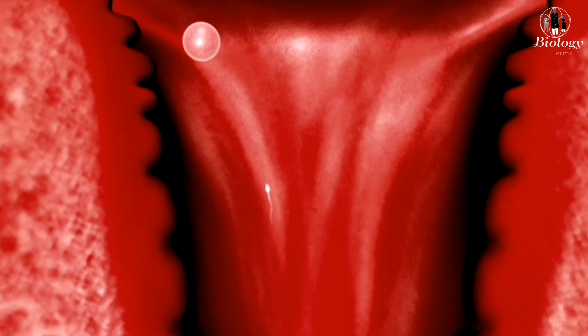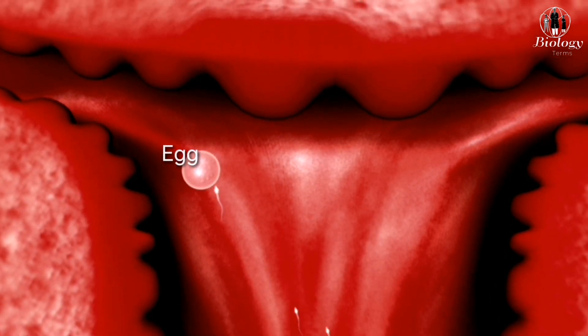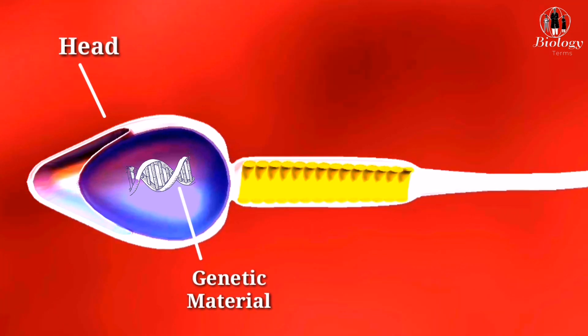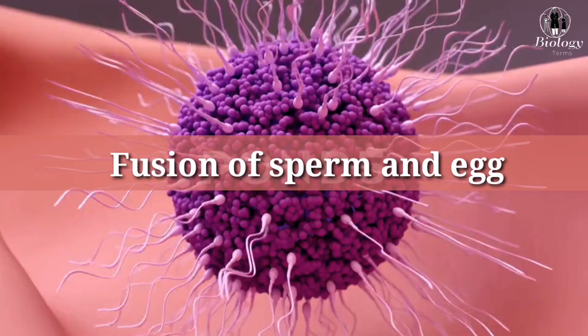If a sperm cell meets the egg cell in the fallopian tube, fertilization can occur. The head of the sperm cell contains genetic material, while the tail helps it swim towards the egg.